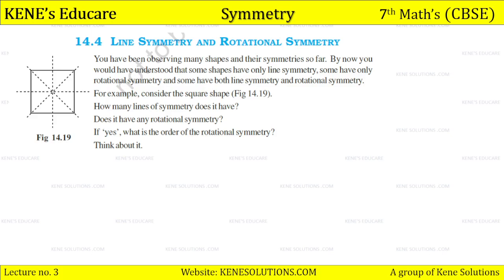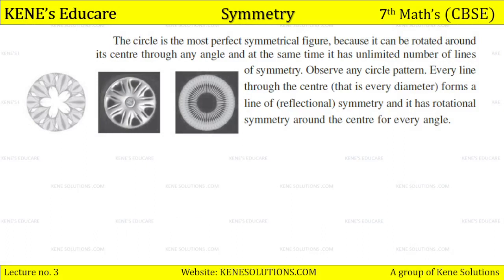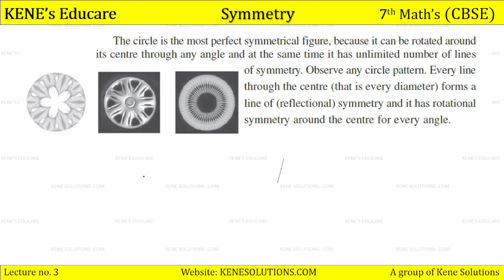The circle is the most perfect symmetrical figure. It can be rotated around its center to any angle, and at the same time it has an unlimited number of lines of symmetry. Observe any circle pattern shown in the diagram — every diameter forms a line of reflectional symmetry, and it has rotational symmetry around the center for every angle.